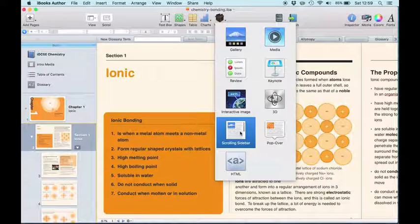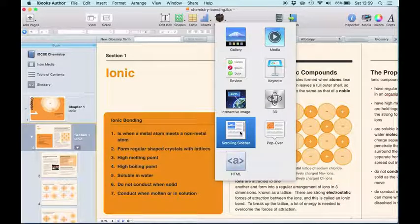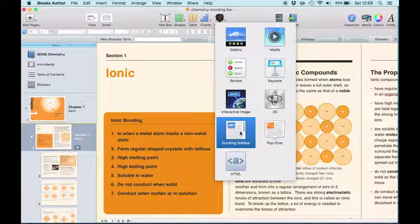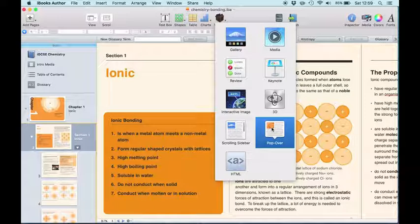Keynote allows you to embed Keynote. Interactive image allows you to label up an image and zoom in and out of it with the labels. 3D allows you to embed Collada files. Scrolling sidebar, I feel it's a bit naff, but it allows you to create a fixed height and width area that will scroll up and down.